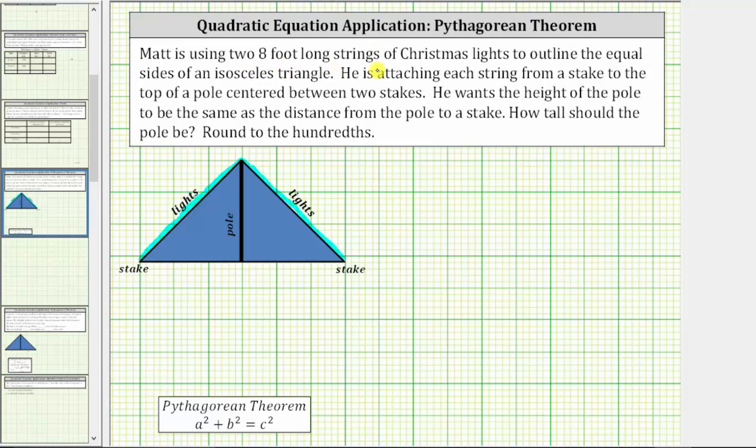Matt is using two eight foot long strings of Christmas lights to outline the equal sides of an isosceles triangle. Looking at the diagram below, this means Matt will have lights along this side of the isosceles triangle as well as this side.